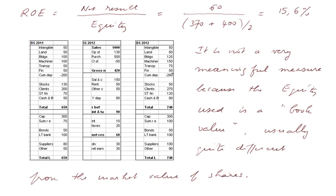Here is a sequence of figures, the initial balance sheet, the income statement, and the end balance sheet. So the ROE is the net result of 60 divided by the average value of equity. That is 370 plus 400 divided by 2, that's 385. And 60 divided by 385 is 15.6%.